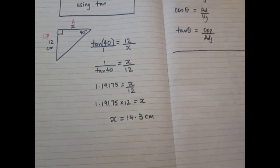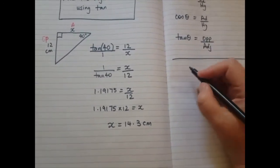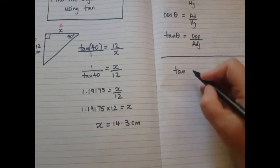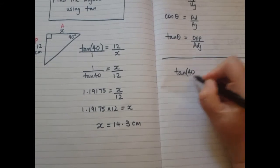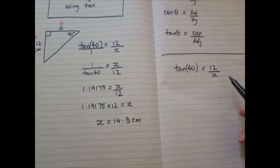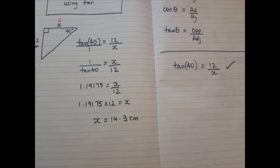First it's really important that you write down the formula with tan, showing that you know the angle goes here and then you have 12 over x. You must write this. You will get a mark for writing this.